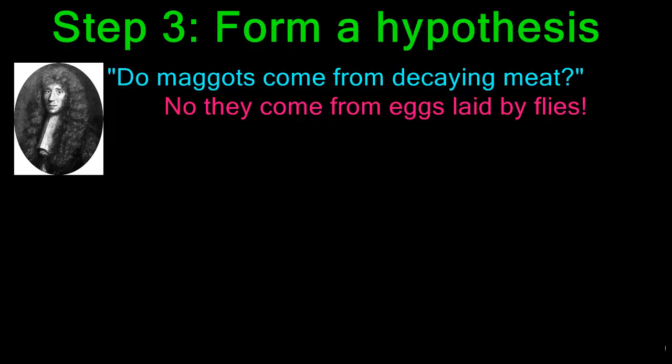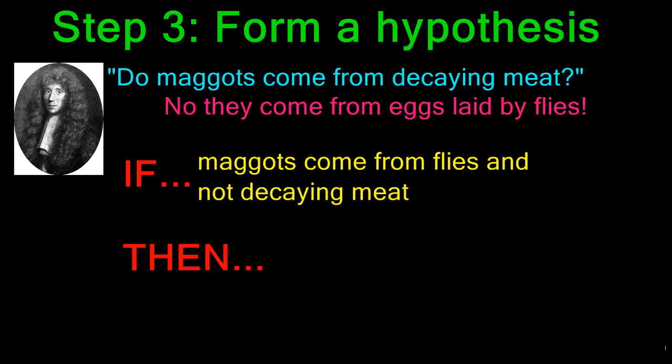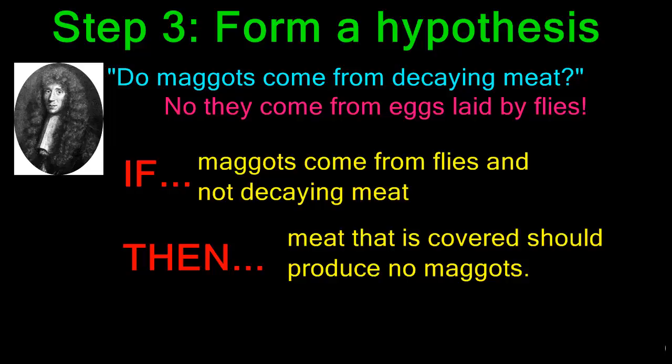But rather than just phrase the question like this, we'll put it in an if-then format. So as far as Redi is concerned, if maggots come from flies and not decaying meat, then meat that is covered should produce no maggots. This gives him a good outline for designing an experiment to answer his question.